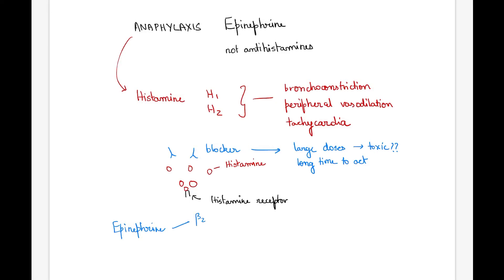Its beta-2 agonistic action results in bronchodilation, reversing the bronchoconstriction caused by histamine.